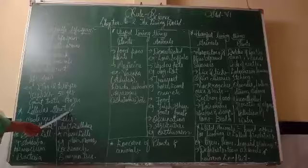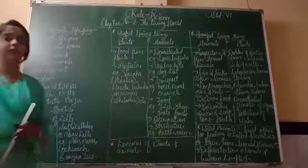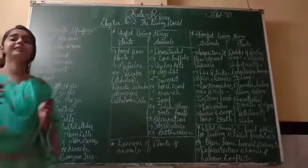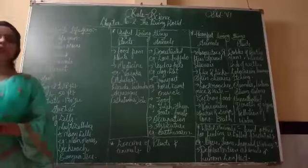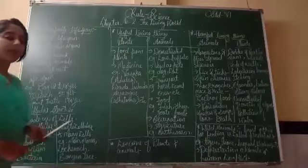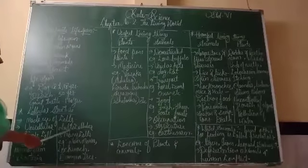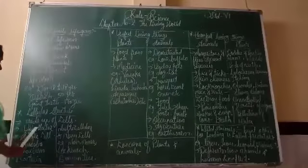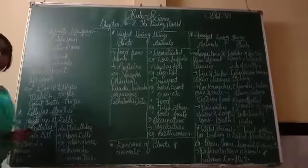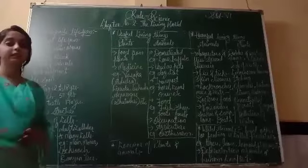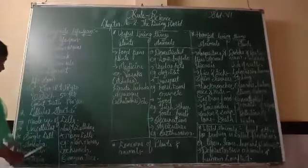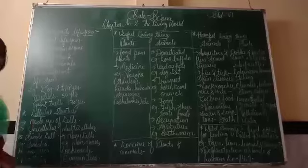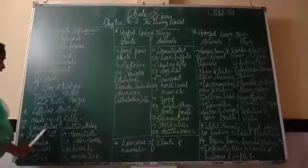The next point is cellular structure. What is the meaning of cellular structure? Our body is made up of cells, and that is known as cellular structure. We have two types of cells: unicellular and multicellular. Unicellular means single cell — only one cell. Examples include amoeba, paramecium, bacteria, etc.